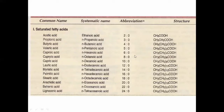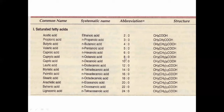Even carbon saturated fatty acids include: acetic acid (2 carbons), butyric acid (4 carbons), caproic acid (6 carbons), caprylic acid (8 carbons), capric acid (10 carbons), lauric acid (12 carbons), myristic acid (14 carbons), palmitic acid (16 carbons), stearic acid (18 carbons), arachidic acid (20 carbons), behenic acid (22 carbons), and lignoceric acid (24 carbons).